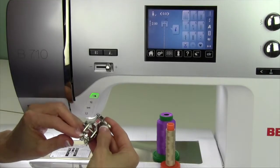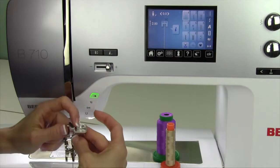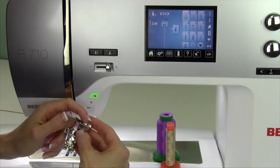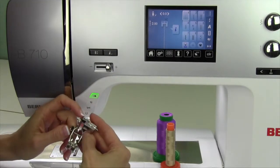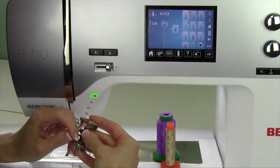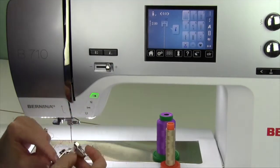A note about some of the feet that you put on this machine: you'll notice that they have an eye up here. The 57D foot, for example, is a quarter inch foot with a guide, which is great for accurate piecing all the time.